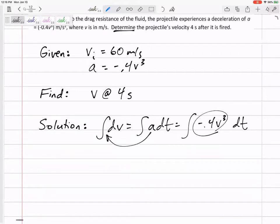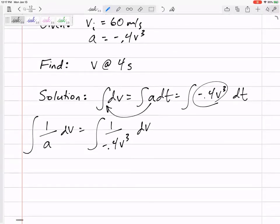So I'm going to take the integral of negative 0.4v cubed with respect to t, but I should just go ahead and divide this over. So it's really integral one over a dv. So the integral of one over negative 0.4v cubed dv.